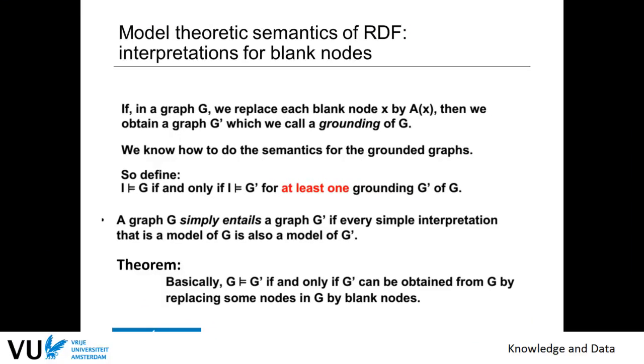And we have also to take care of the blank nodes and basically how you do this is by rewriting blank nodes into URIs so that they basically have the same meaning like the grounded graphs and then you get a definition.